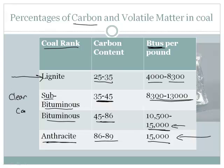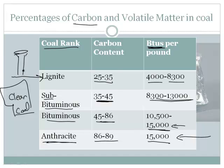Some coal has other impurities that are bad for the environment. When you burn coal to turn the turbine and produce electricity, gases are given off. Some of those gases are dangerous. Depending on where you mine the coal, some types are good and some are not so good for the environment. There are ways to clean it up and scrub it out, as they say.